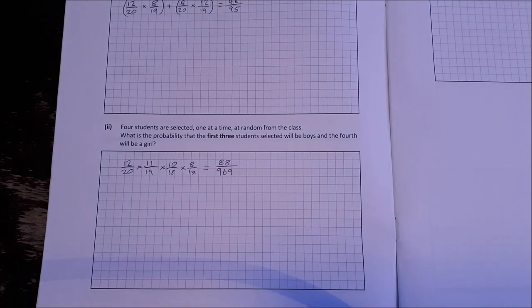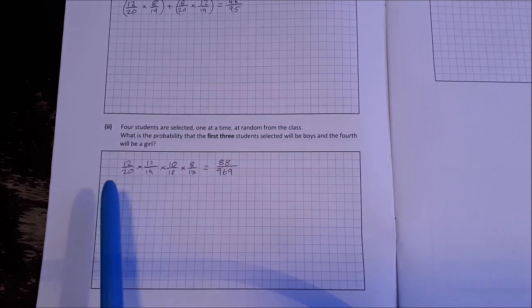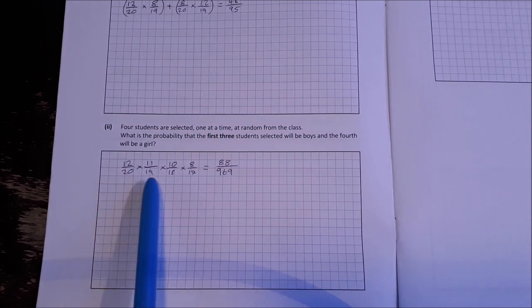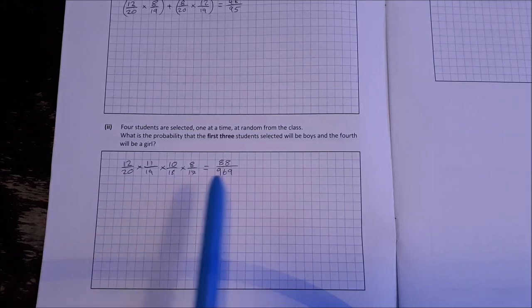Part 2. Four students are selected one at a time at random from the class. What's the probability that the first three will be boys and the fourth will be a girl? So this is boy, boy, boy, girl and remember we're reducing the denominator each time because the students are not put back in. So 88 over 969.